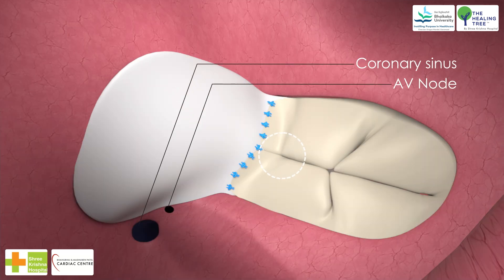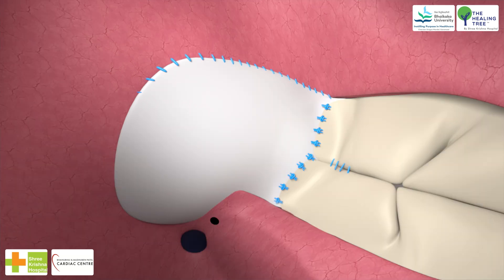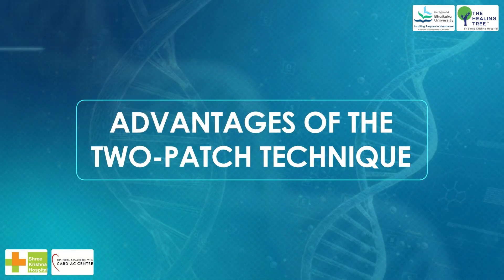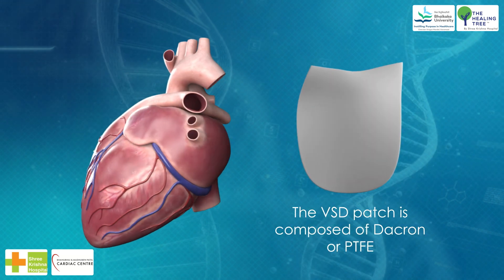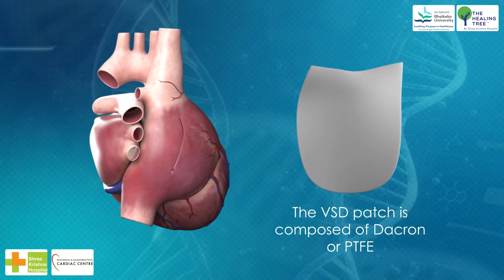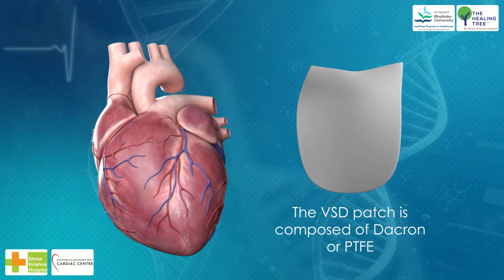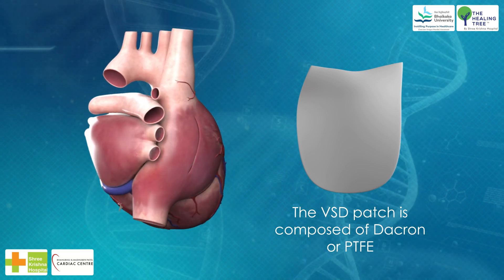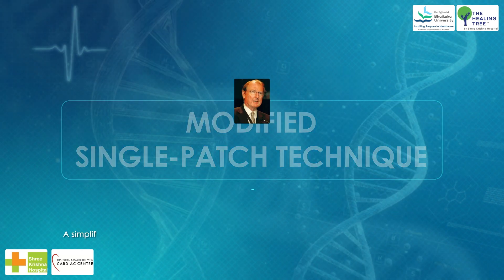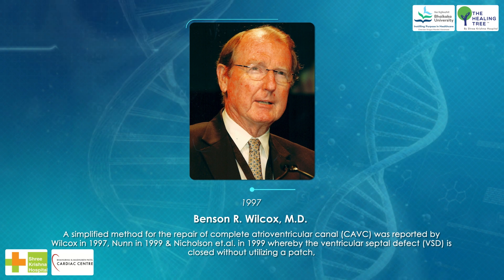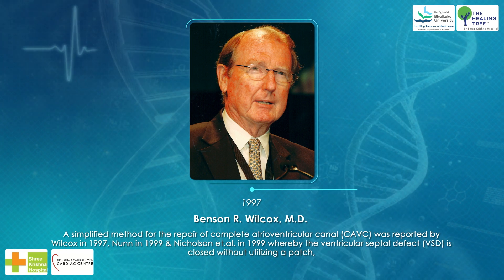The tricuspid valve is repaired in similar fashion to the left-sided AV valve, by closing the cleft between the right superior and inferior leaflets and approximating the valve edge to the atrial septal defect patch. Advantages of the two-patch technique: (A) the VSD patch is composed of Dacron or PTFE, which does not dilate over time and avoids the risk of aneurysm formation, which has been reported after using pericardium for closure of the VSD component of the AV canal defect.